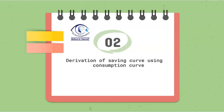Must-do topic number 2 is the derivation of the saving curve using the consumption curve. You have to make a consumption-income curve and from that derive the saving curve. This is a diagram question.